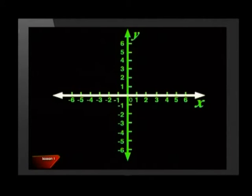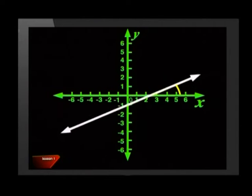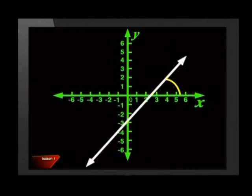When we work with straight lines on the Cartesian plane, we define the angle of inclination as the one formed between the positive x-axis and the straight line. It is measured from the positive x-axis in an anti-clockwise direction. Have a look at this example.